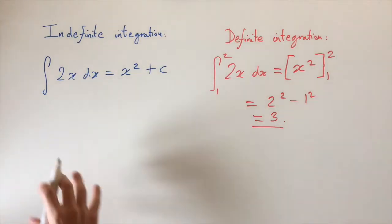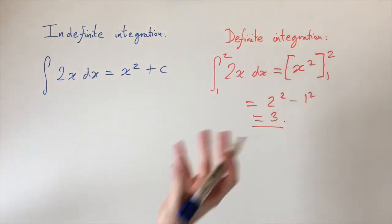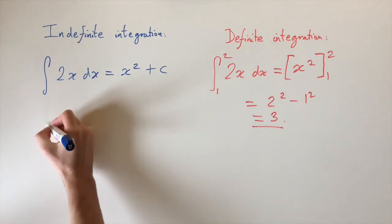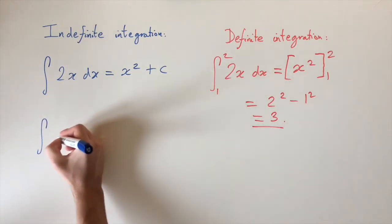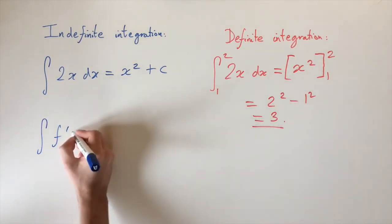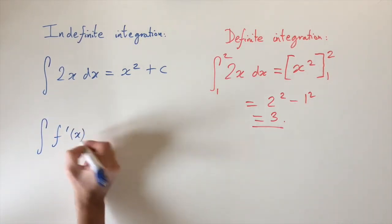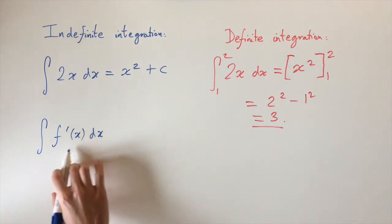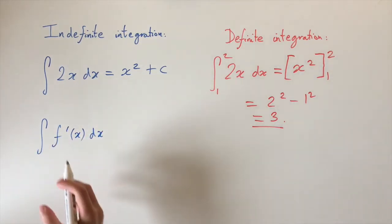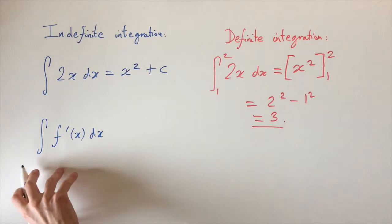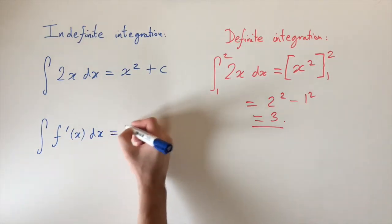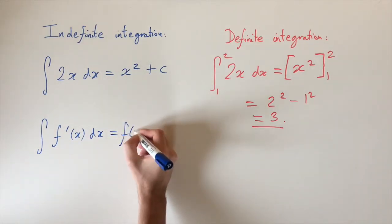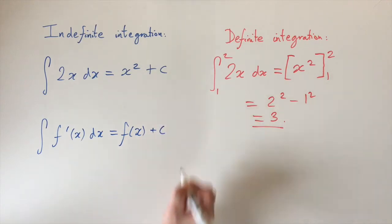Let's talk about the general form of these two types of integration. For indefinite integration, we're going to be integrating a function — I'll call it f′(x) dx, where f′ is the derivative of f. When we integrate this, we get the antiderivative, which is f(x) plus c.